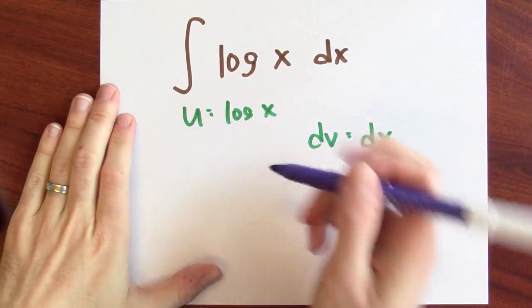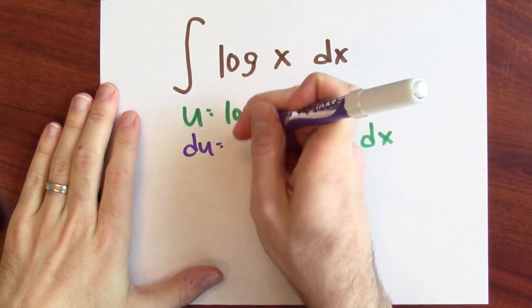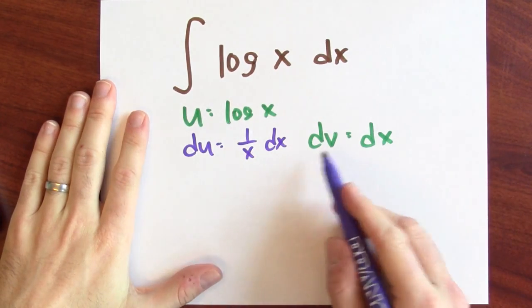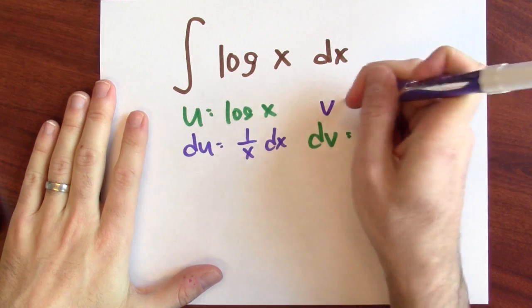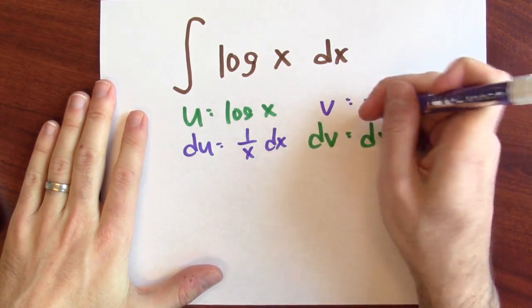Let's see. If u is log x, then du is 1 over x dx. And if dv is dx, then an antiderivative would just be x.